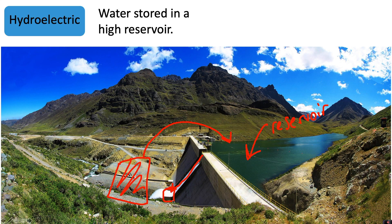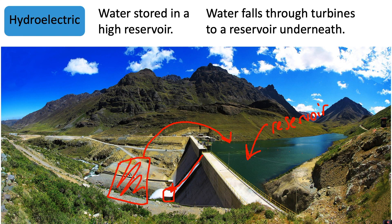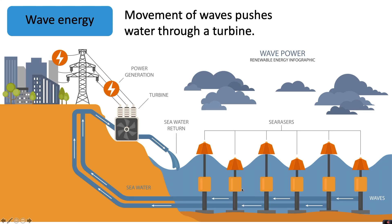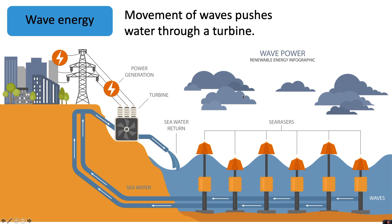Another way to generate electricity using water is through wave energy. The movement of waves pushes water through a turbine. With wave energy, you might see some structures on top of the sea — as waves move up and down, they push water through a system of pipes and through a turbine, which turns a generator to generate electricity. There are various different designs for wave energy. Like wind energy, wave energy is not very reliable because it relies on there being lots of waves.